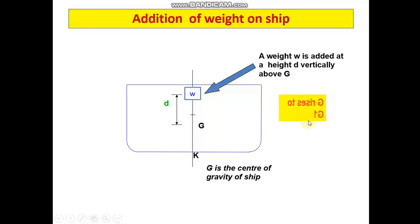As per the question, you are adding a weight w which is at a distance d above center of gravity, and this has led to your G to rise to a new point G1. GG1, as we know, is found out by the formula: GG1 is w into d divided by W plus w. If you apply this formula with the data given in the question, you can find out that GG1 is 0.12 meters. This is the method by which we can solve this question.